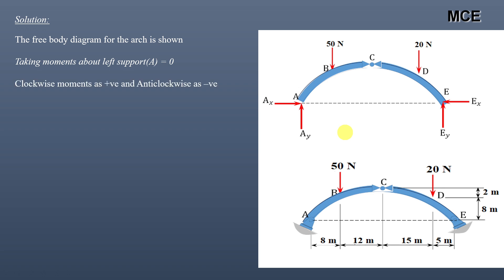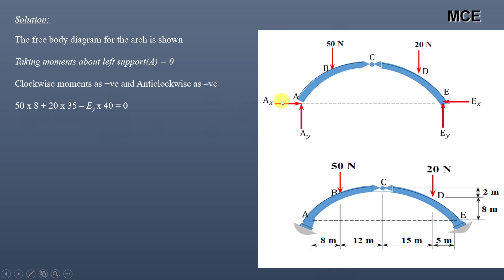We will take the moment about the left support A equal to zero, assuming clockwise moments are positive and anti-clockwise moments are negative. The first moment is of 50 newtons — its distance from A is 8 meters, so 50 into 8 in the clockwise direction, which is positive. Next, the moment of 20 newtons — its distance from A is 8 plus 12 plus 15, which is 35 meters, again clockwise. Then the moment of support reaction Ey about A — the total distance between E and A is 40 meters, and this moment is anti-clockwise, so it is negative. The moments of Ax, Ay, and Ex about A are zero because the lever arm is zero.